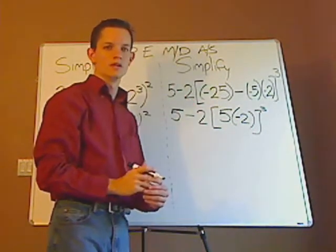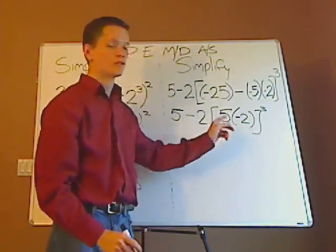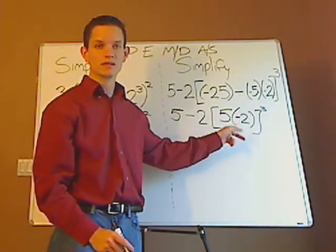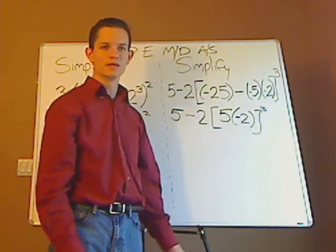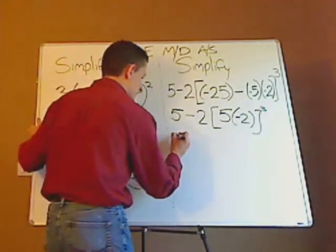All right then what are you going to do? You're still going to do what's inside the brackets. What's 5 times a negative 2? Right it's a negative 10.